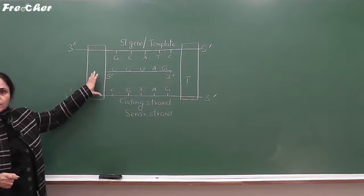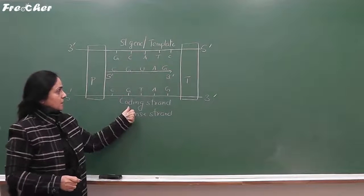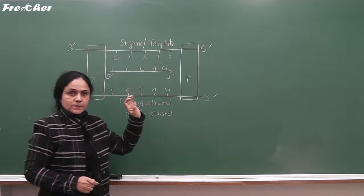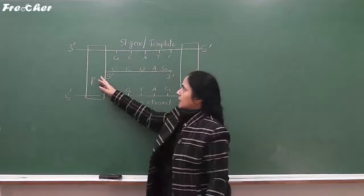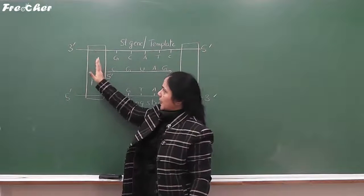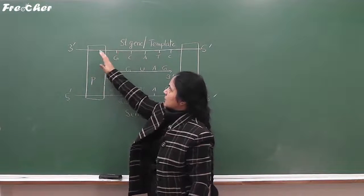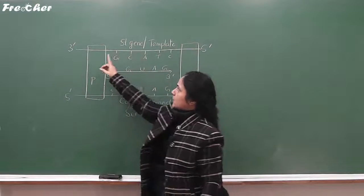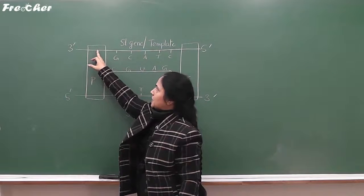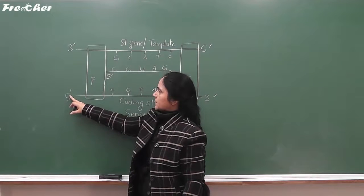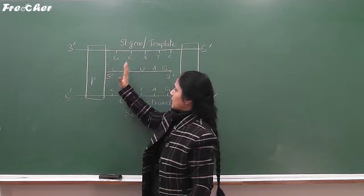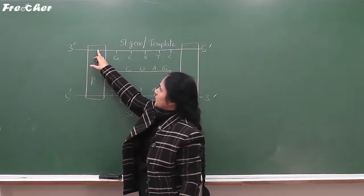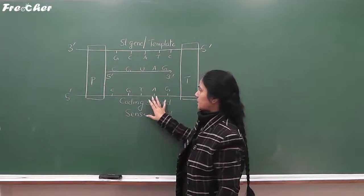Now we study what is a promoter, what is a terminator, what is a structural gene, and what is a coding strand. The promoter is a sequence of DNA where RNA polymerase enzyme binds, and the promoter is present upstream of the structural gene. The terminator is present downstream of the structural gene. This promoter is said to be located towards the 5-prime end of the structural gene, with respect to the polarity of the coding strand, and it defines the coding strand.